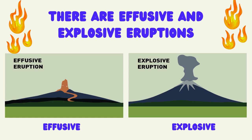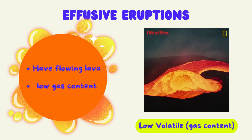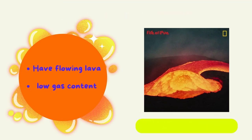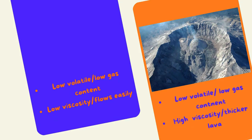There are effusive and explosive eruptions. Effusive eruptions are categorized by having low volatile or low gas content, as well as having flowing lava. If something has low volatile and low gas content, as well as low viscosity, or it flows easily, then it will look like this video where the lava is flowing.